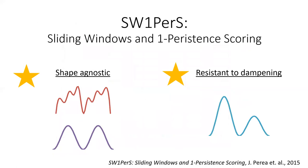In summary, SWIPERS can be used to find and quantify repetition in numerical time series data. SWIPERS stands for Sliding Windows and 1-dimensional Persistence Scoring. Two key characteristics are that it is shape-agnostic — it scores as periodic shapes that look more complicated than a simple sinusoidal wave — and it is resistant to the effects of damping. If a time series decreases in amplitude but still has repetition, SWIPERS will score it highly.